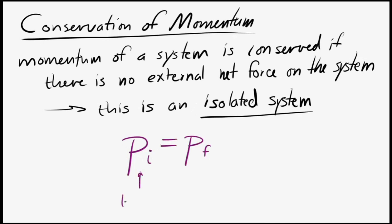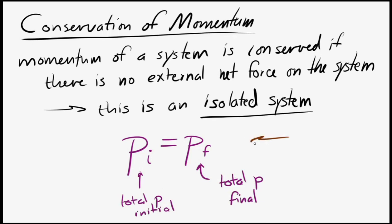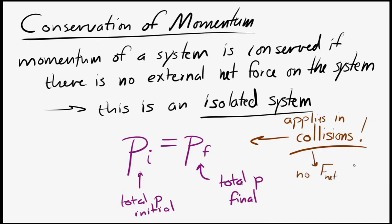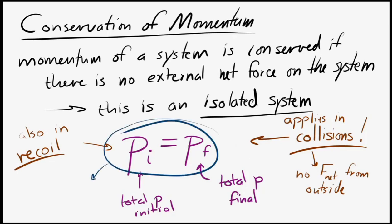This is most often applied in situations involving collisions, where two objects interact and everything around them has very little effect — no net force from the outside, only the two objects interacting. So it's an isolated system. We also apply this in recoil situations, such as a gun firing. The equation pi equals pf is very similar to energy conservation in a closed system, where ei equals ef.